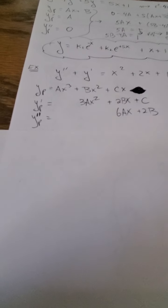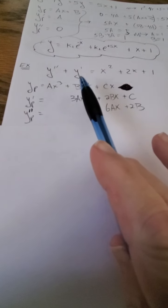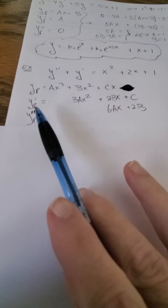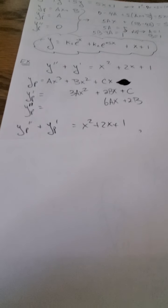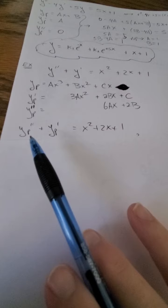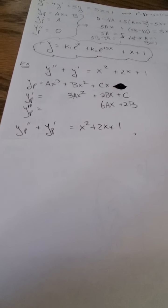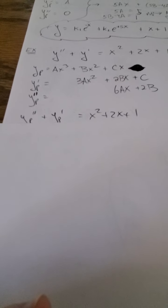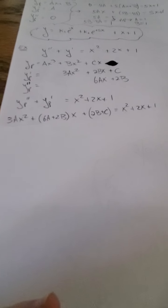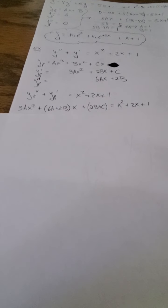See, if I combine, now, I'm not adding in my yp because there is no yp in the original differential equation. I'm just going to add these bottom two, and that's going to give me yp double prime plus yp prime equals x squared plus 2x. And when I plug that in, that's going to give me 3ax squared plus 6a plus 2bx plus 2b plus c equals x squared plus 2x plus 1.